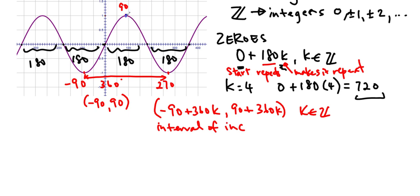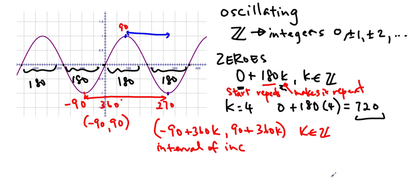The interval of decrease starts here, and it ends here. So why don't you try to find out what the interval of decrease is for the sine function by pausing. And then I'm just going to write it right now. Okay, so hopefully you wrote it down. The interval of decrease, it also repeats every 360. You can see that the distance from here to here is 360. So the interval of decrease begins at 90, and it repeats every 360. 90, 90 plus 360k, and it ends at 270, and it will repeat every 360, and I will define k in Z.